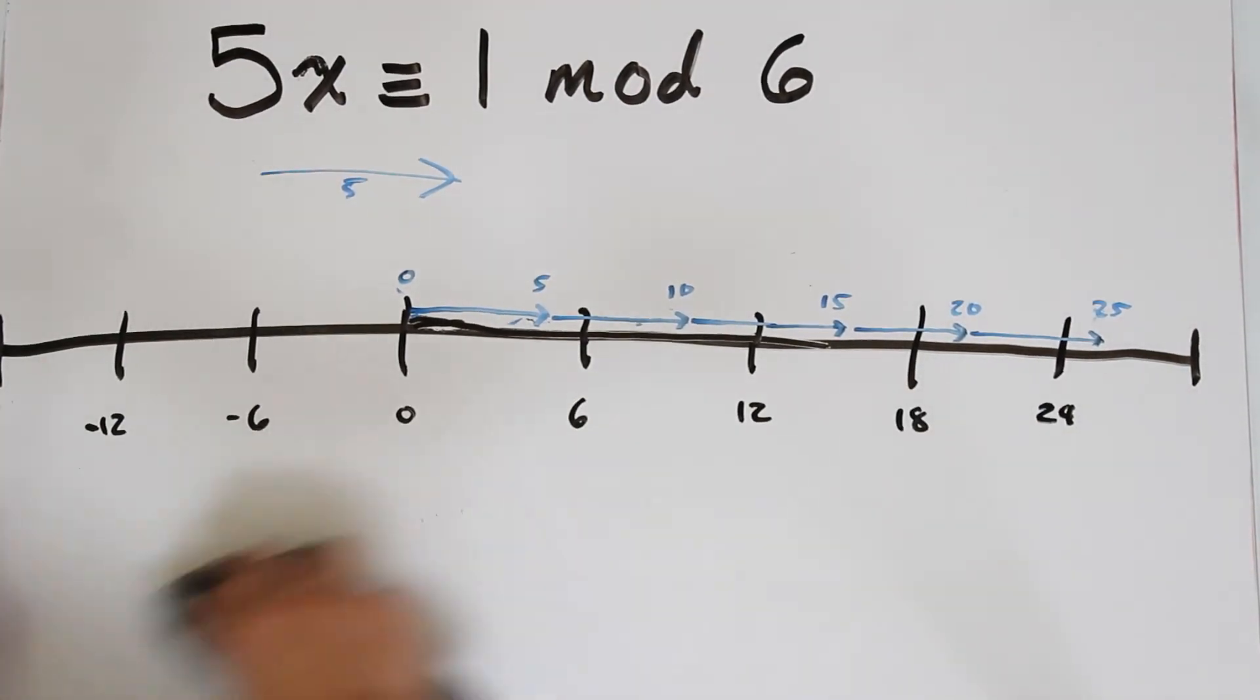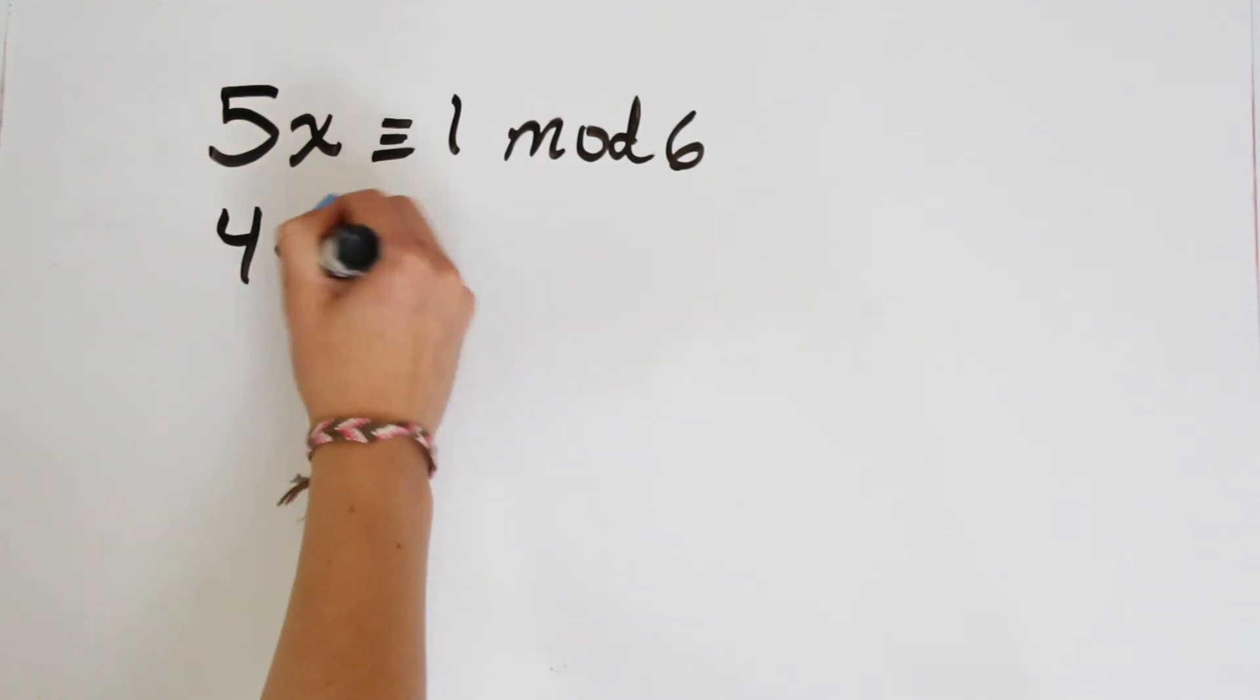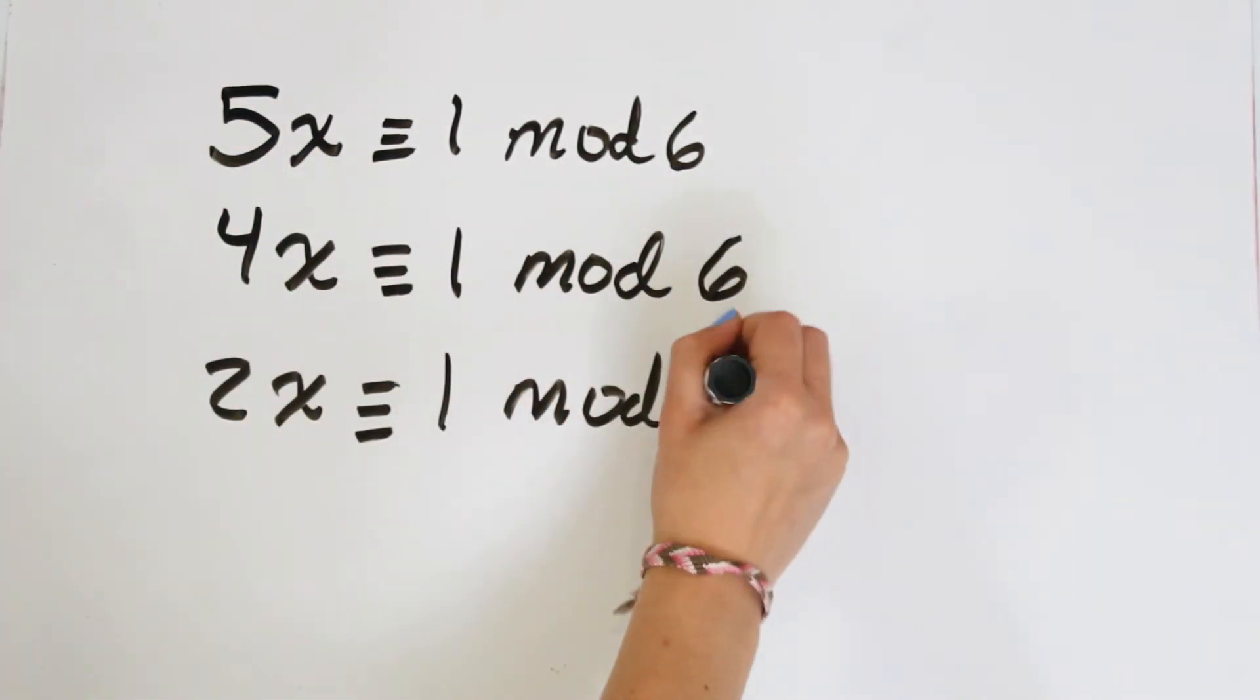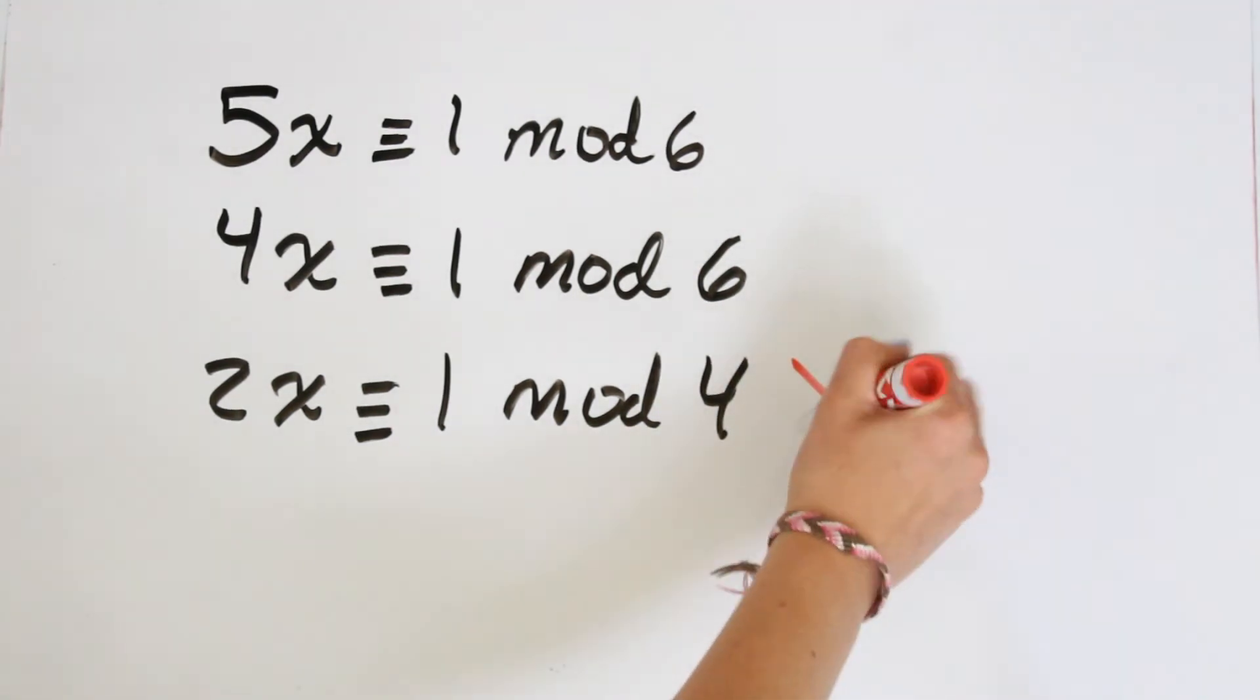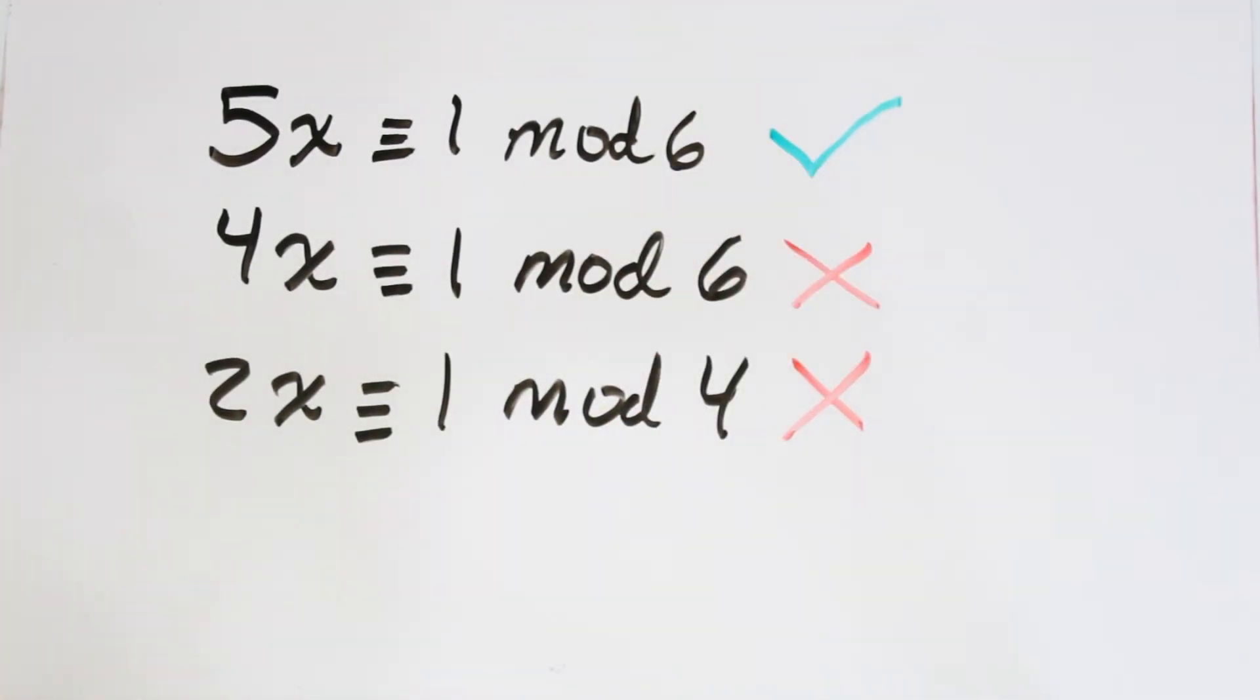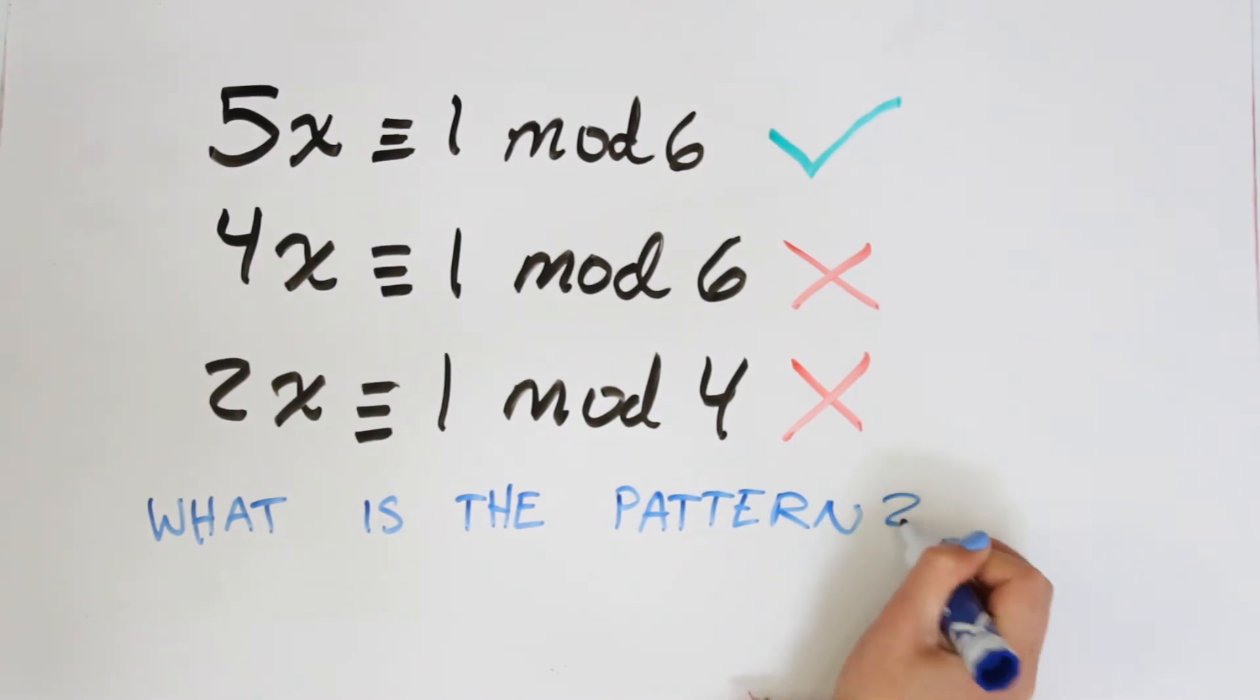Now that we've looked at lots of examples, let's try to see a pattern. We have 5x is congruent to 1 mod 6, 4x is congruent to 1 mod 6, and 2x is congruent to 1 mod 6. And we know that the first 2 did not work. So 2x and 4x didn't work, but 5x worked. So the question is, what is the pattern?